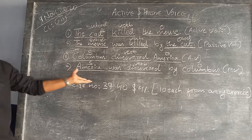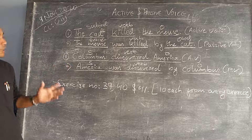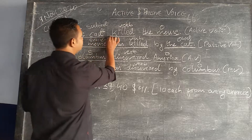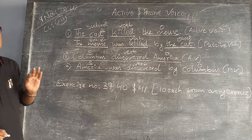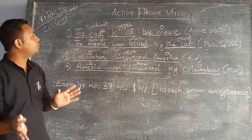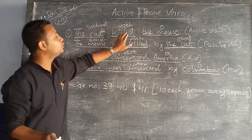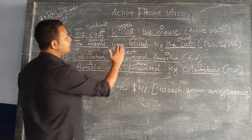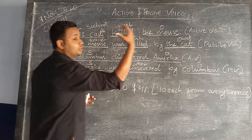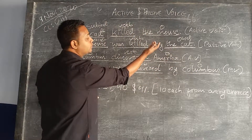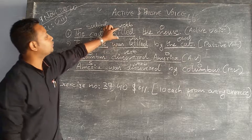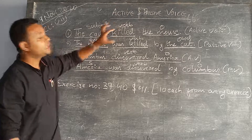Now let's look at some more explanation. In active voice — 'The cat killed the mouse' — your first job is to identify the verb. In most active and passive voice sentences, the verb is followed by the object. Once you identify the verb, the object placed after it will become the subject when you make the passive form.